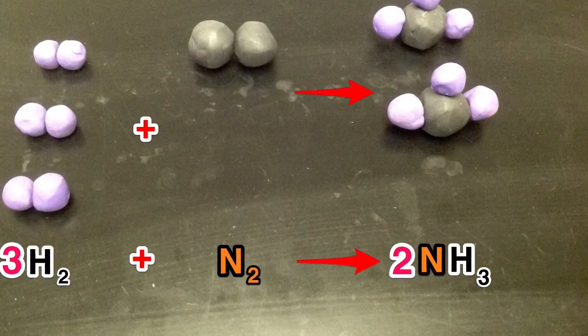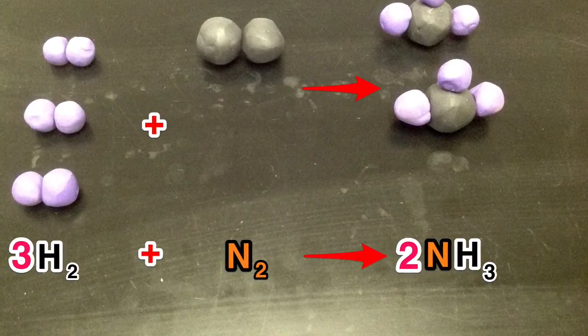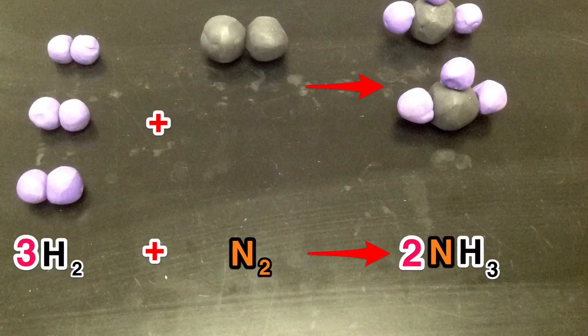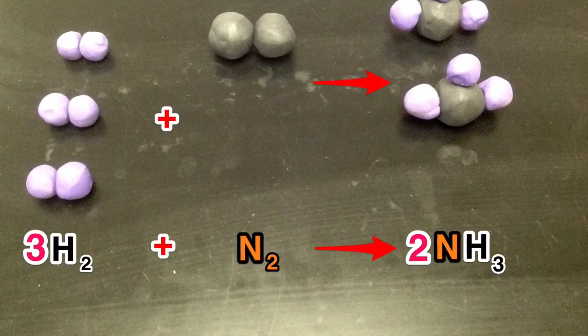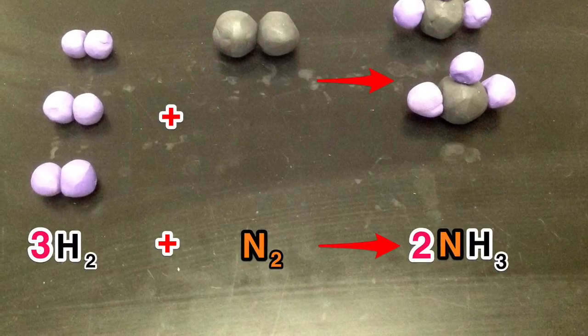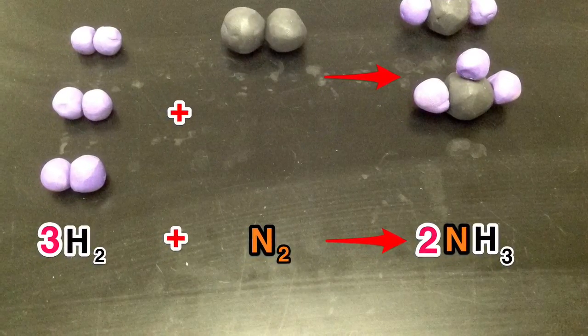So our final balanced chemical equation for ammonia is 3H2 plus N2 yields 2NH3. Three molecules of hydrogen plus one molecule of nitrogen forms two molecules of ammonia.